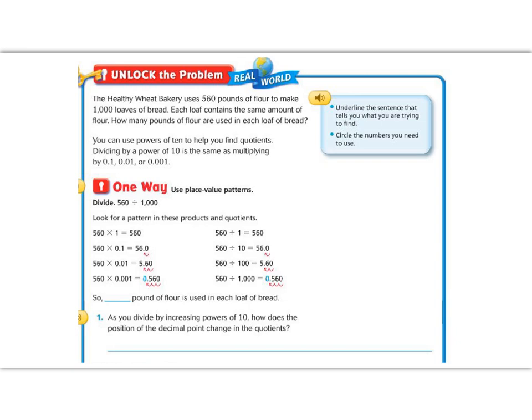You can use powers of 10 to help you find quotients. Dividing by a power of 10 is the same as multiplying by 1 tenth, 1 one hundredth, or 1 one thousandth.